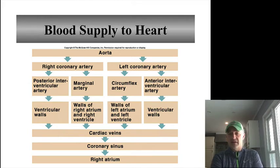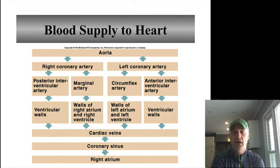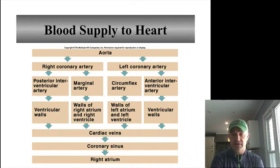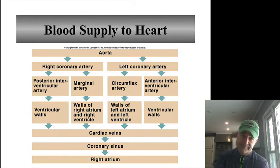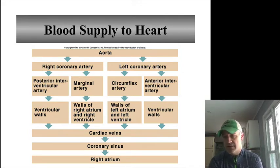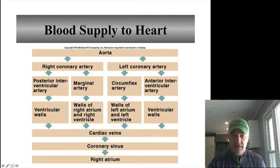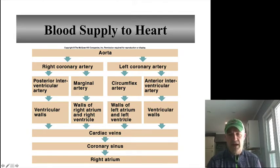This is the basic supply, and if you know this table, it is sufficient for what you need to know. You have the aorta that goes to the left and right coronary arteries. You have the marginal versus the circumflex on the left side, and then you have the ones going down the back side and front side between the ventricles — the posterior interventricular artery and the anterior interventricular artery. Those are supplying blood mainly to the ventricle walls, while the marginal and circumflex supply both the atrium and ventricle walls.